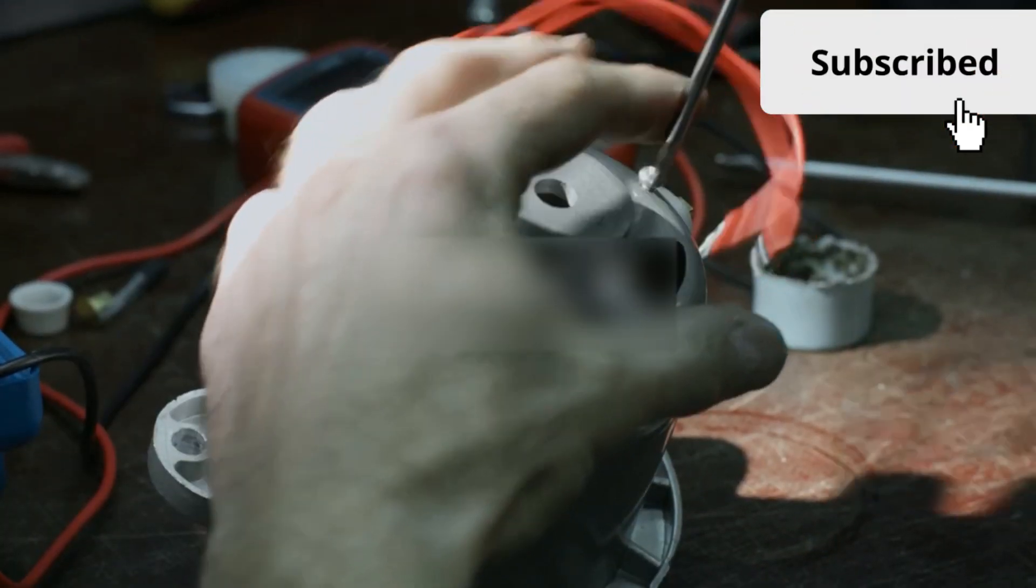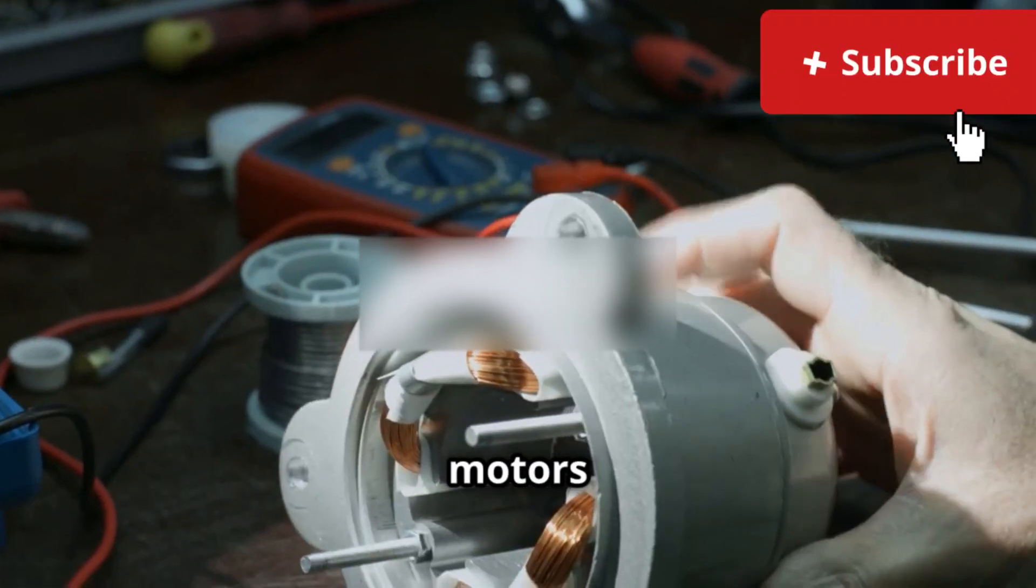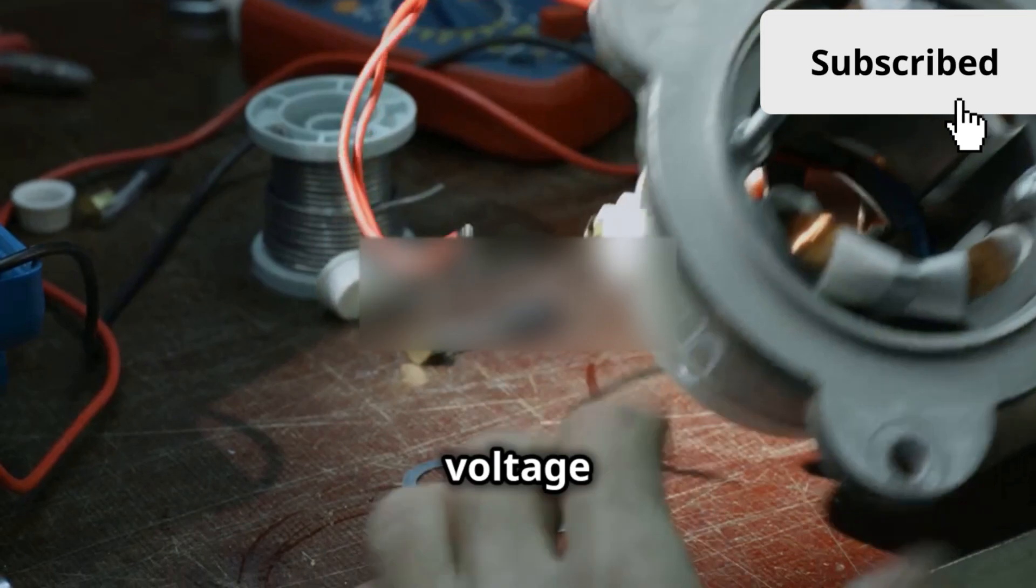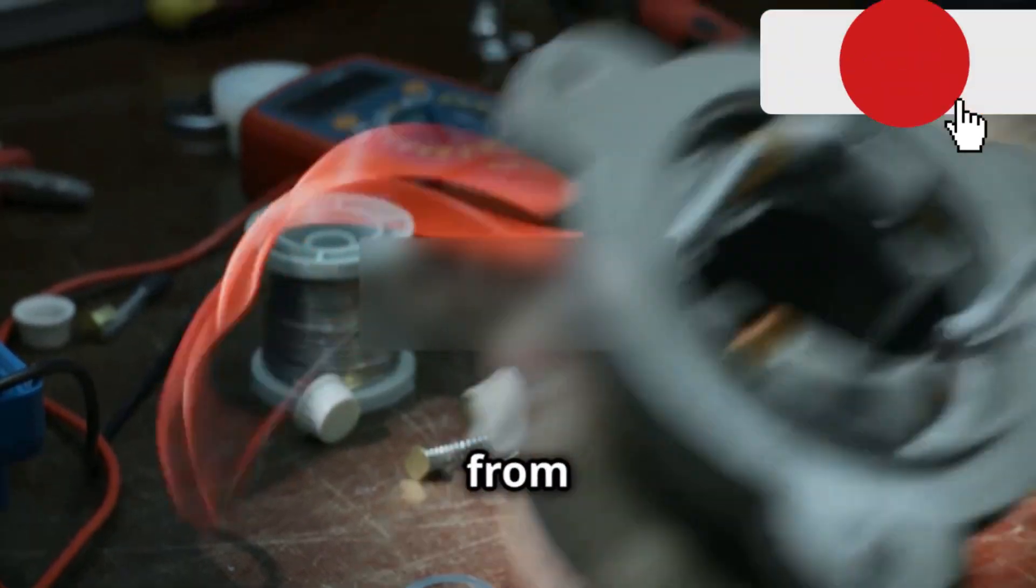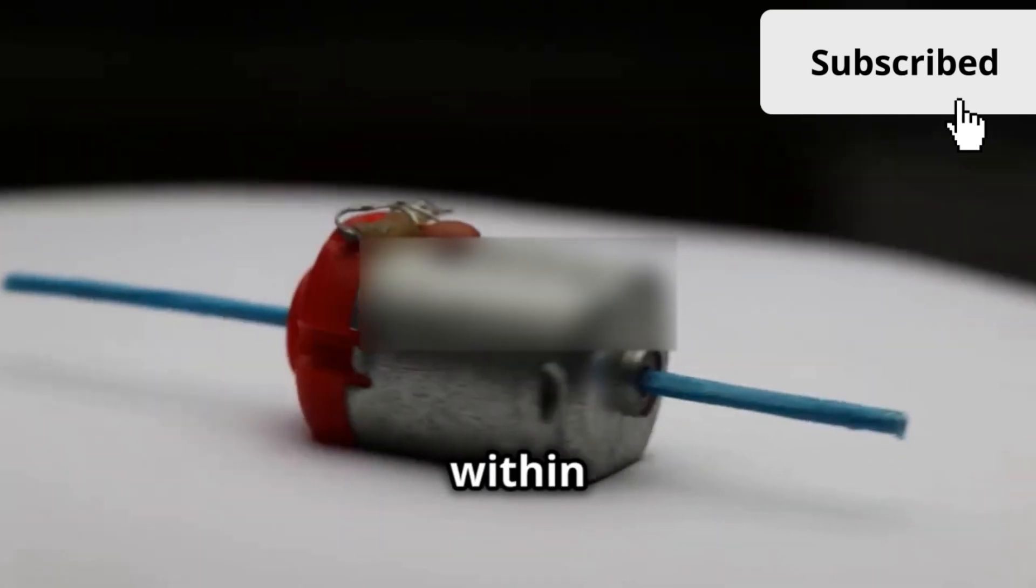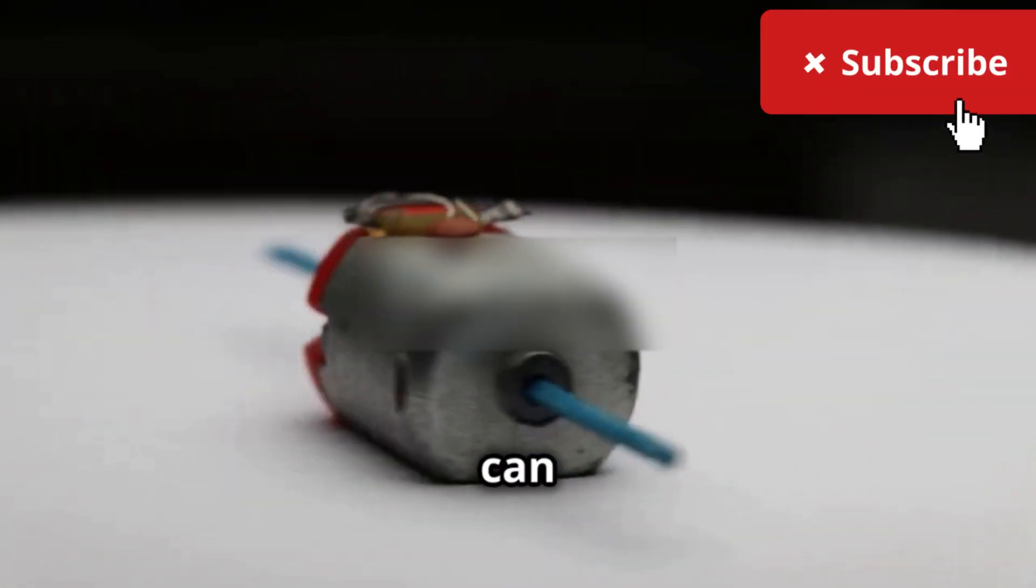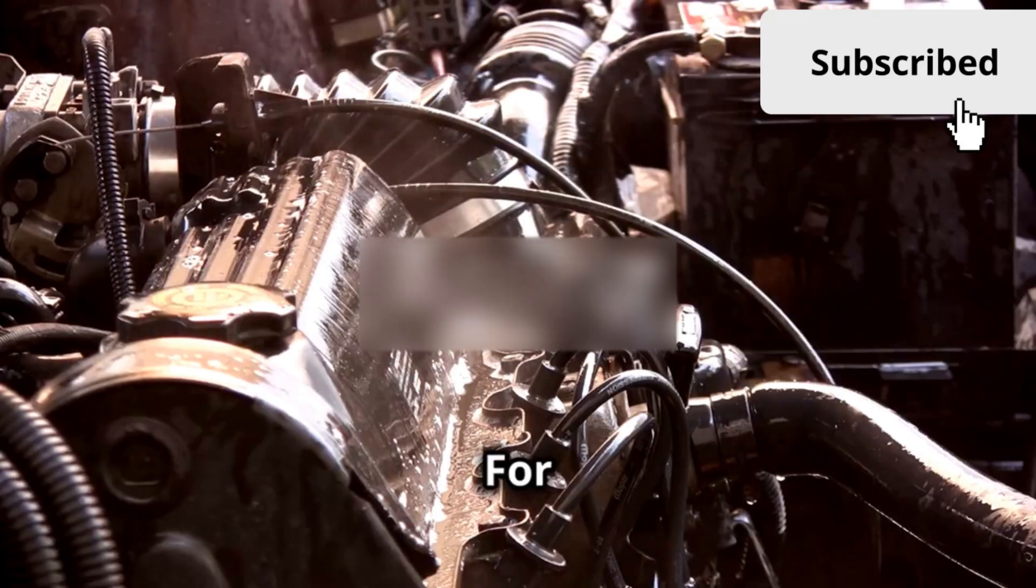One common misconception about DC motors is that they can handle any voltage you throw at them, but that's far from the truth. In reality, motors are designed to operate within a specific voltage range, and deviating from that range can lead to serious issues. For instance, running a motor at a higher voltage can cause it to overheat, while running it at a lower voltage can result in reduced performance and efficiency.